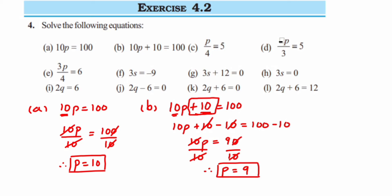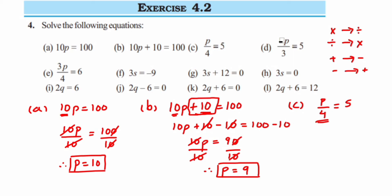Next is problem c: p/4 = 5. This is only one step. The 4 is in division, so to remove it from the left-hand side, we multiply by 4 on both sides. Remember: if you have multiplication, do division; if you have division, do multiplication. Similarly, if it's addition, subtract on both sides; if subtraction, add on both sides. So p/4 × 4 = 5 × 4. The 4s cancel and 5 × 4 = 20, so p = 20.